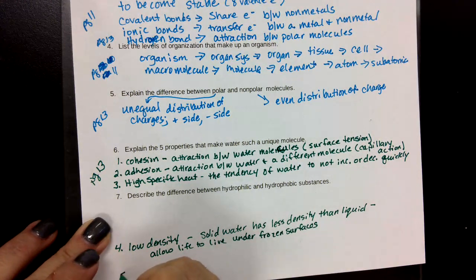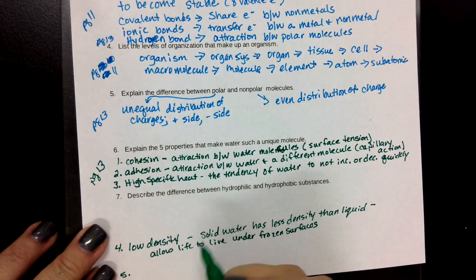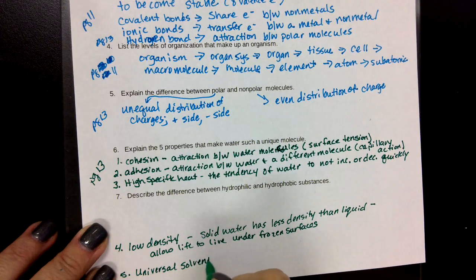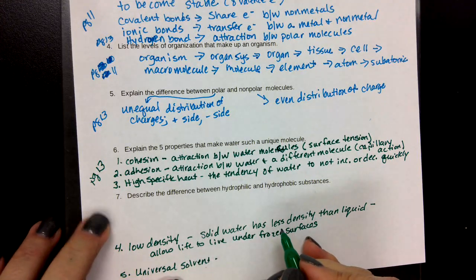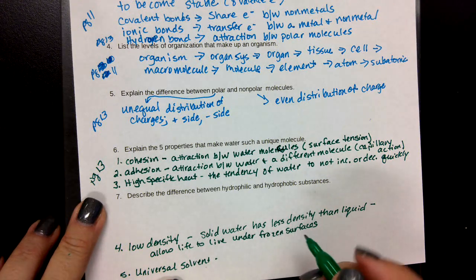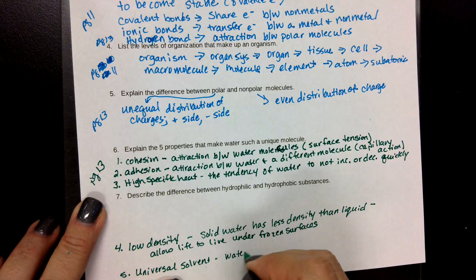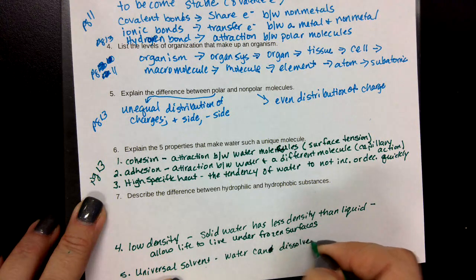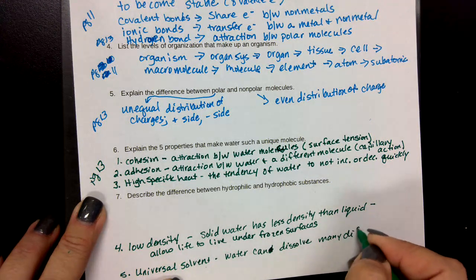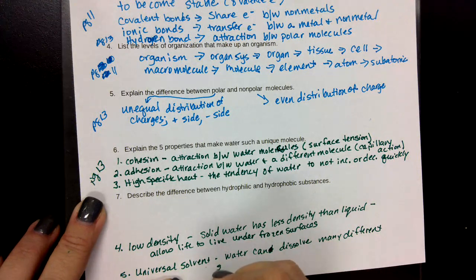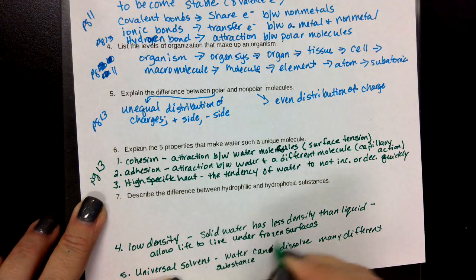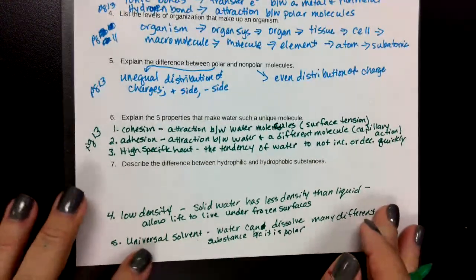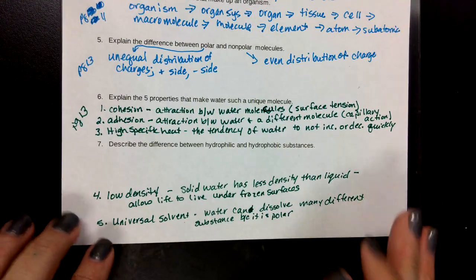And then the fifth one is the terrific solvent. I'm going to say universal solvent. Water dissolves many different substances, and this is because it is polar. Alright, so those are the five properties.